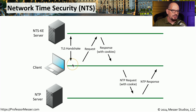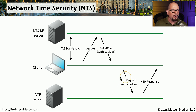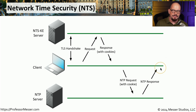First, a TLS handshake occurs between the client and the NTS key exchange server, and then we can request a cookie from that server and receive it in the response. From this point, we perform the NTP request to an NTP server, but we include that cookie information to show that we have authenticated to the key exchange server. We then receive the NTP response, and we now know that we have a valid timestamp from a trusted server.